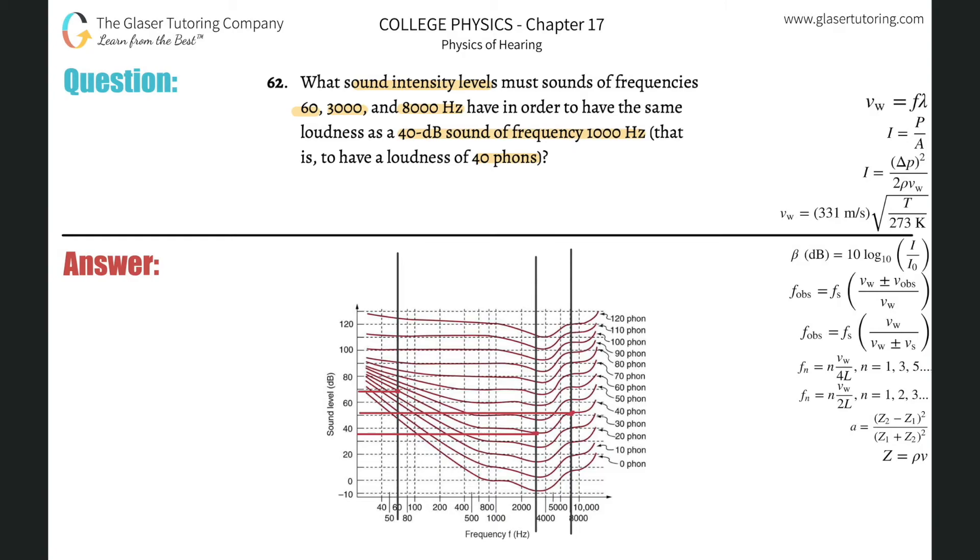And then just interpret. So for 60, it looks like this is about a little less than 70 decibels. For the 3000, it looks like it's 35 decibels. And then for the 8,000, it looks like it's about 52, 51, something like that, decibels.